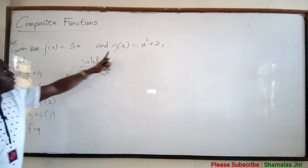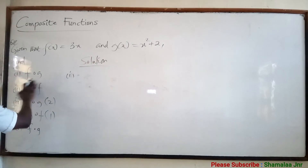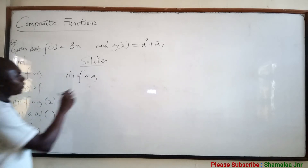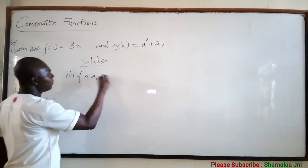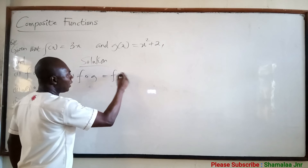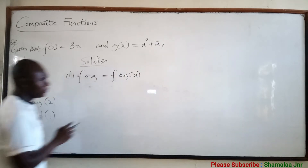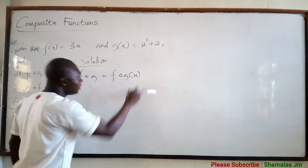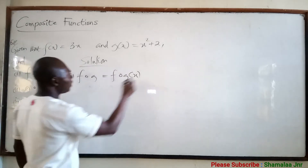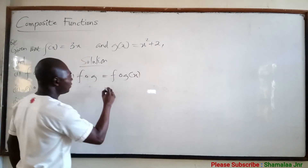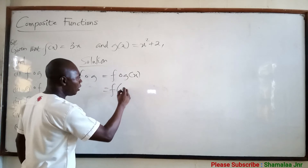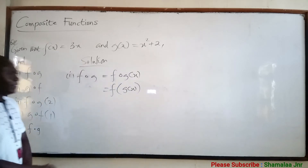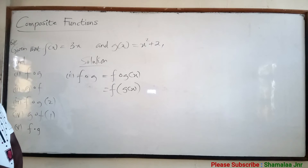So we've been given these two functions and asked to find the solutions. f(x) = 3x and g(x) = x squared plus 2. Now, f of g — this one is the same as f of g of x. This is the meaning of the notation.